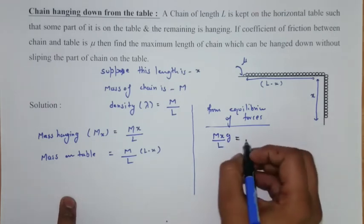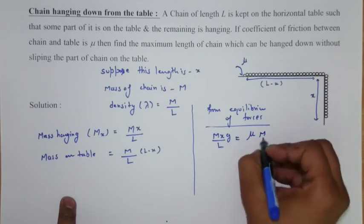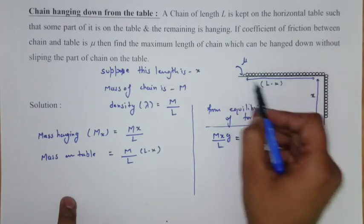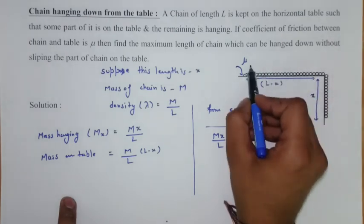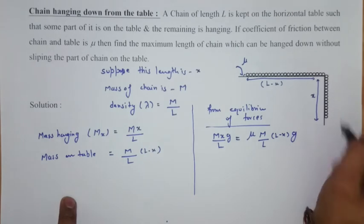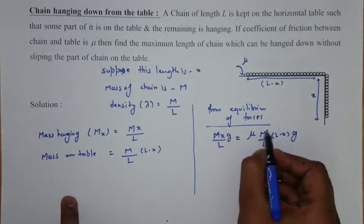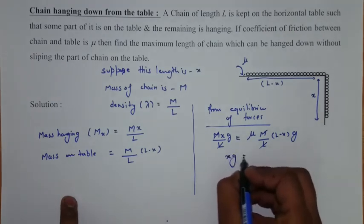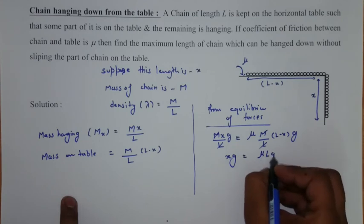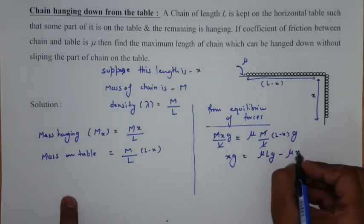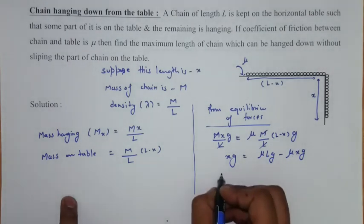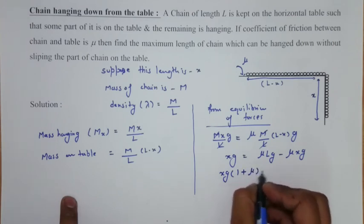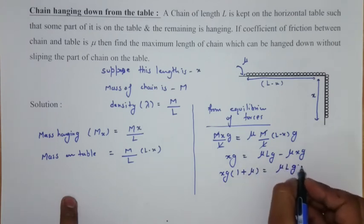It must be equal to mu times M times L minus x over L times G. The force of friction acting on this chain, it would be in opposite direction and this would be in downward direction. So on calculating, we find xg equals to mu Lg minus mu xg. Take mu xg here,